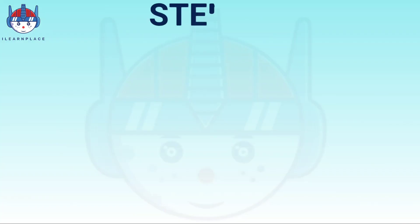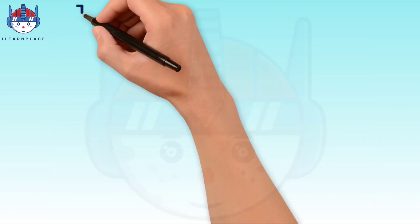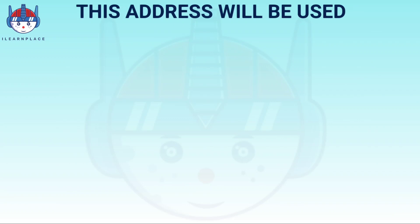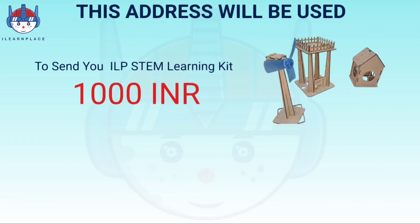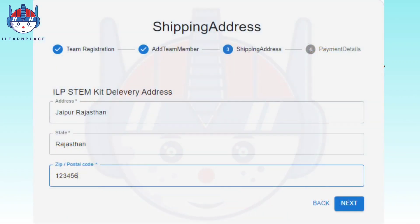Step 4: Add address. You will also need to add an address to your registration form. This address will be used to send you the ILP STEM learning kit worth 1000 Indian rupees and a member card worth 2500 Indian rupees, along with any relevant information about the competition. Finally, click on the next button.